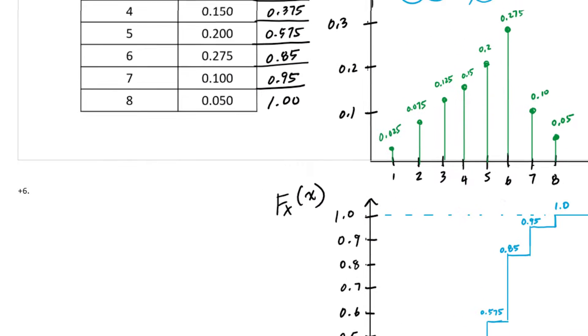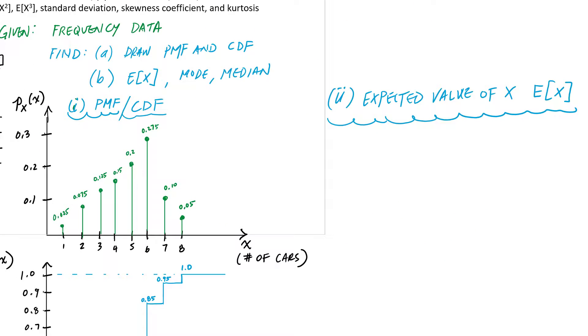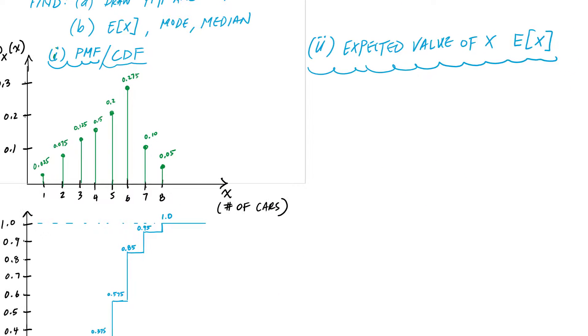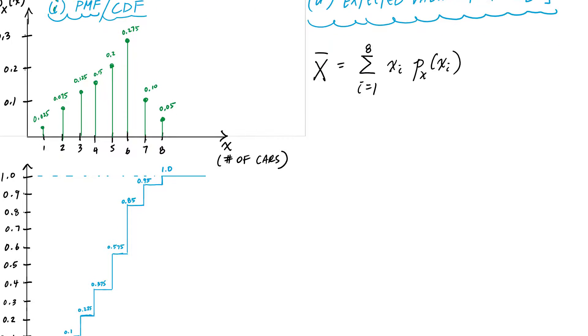Now I can calculate the mean, which would just be kind of a weighted average. This is the sum of i equals 1 to 8, X_i times P_X(X_i).